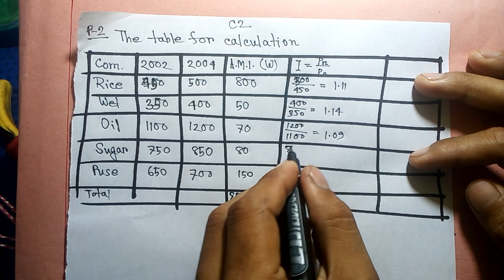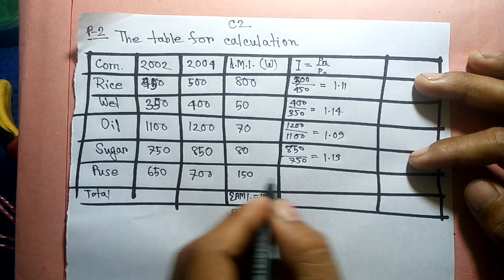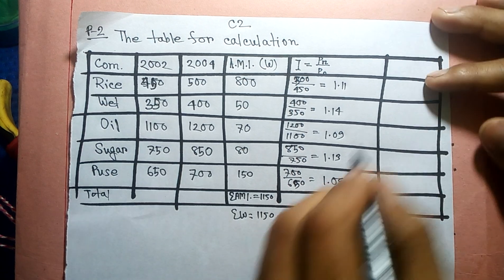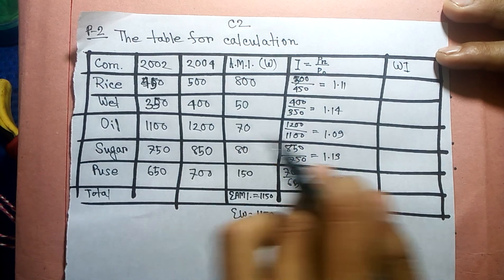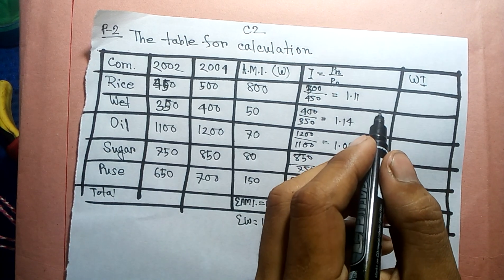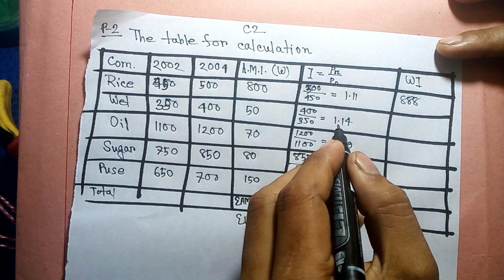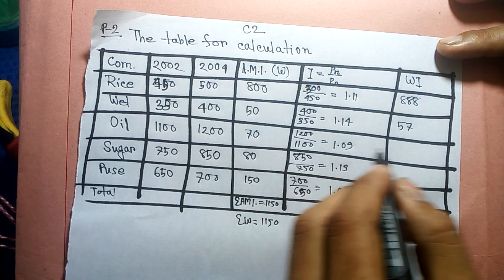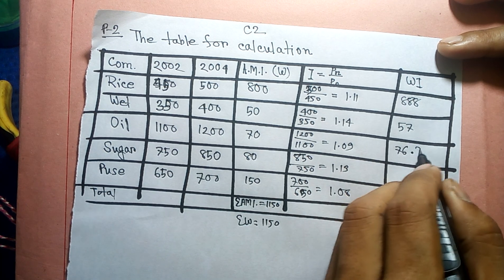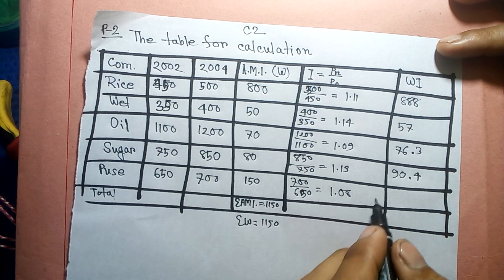After calculation, the index values are: 1.09 for one item, 1.13 for another, and 1.08 for another. We are summing up all the W times I values to get the summation of W×I across all items in the table.